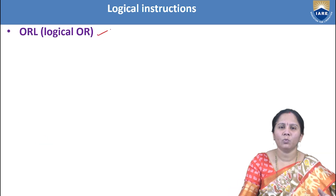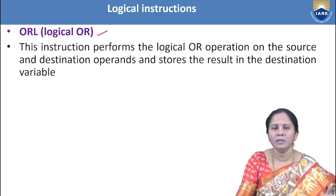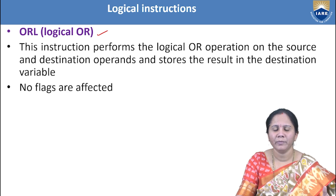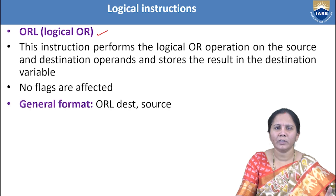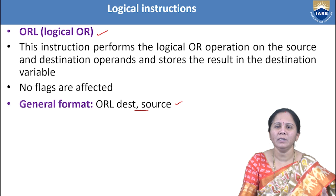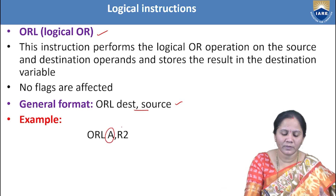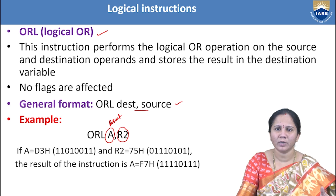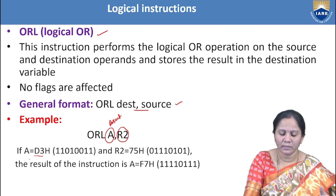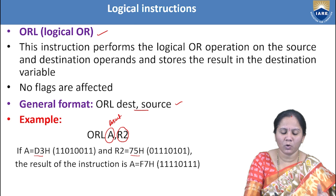ORL performs a logical OR operation between destination and source operands, storing the result in the destination. Flags are not affected. The general format is ORL destination, source. For example, ORL A, R2 with A = D3H and R2 = 75H performs the OR operation bit by bit using the OR truth table, giving result F7H stored in A.